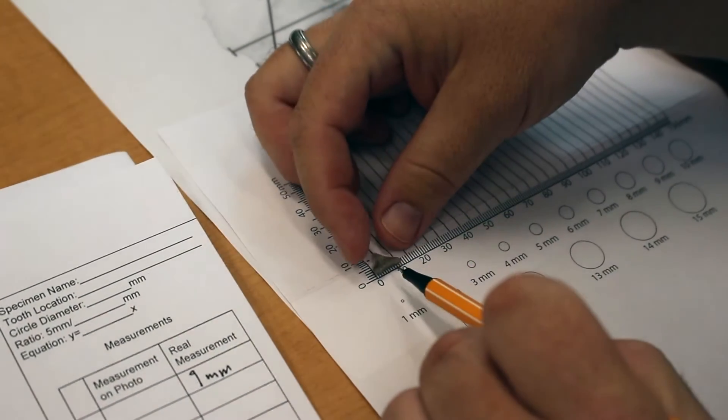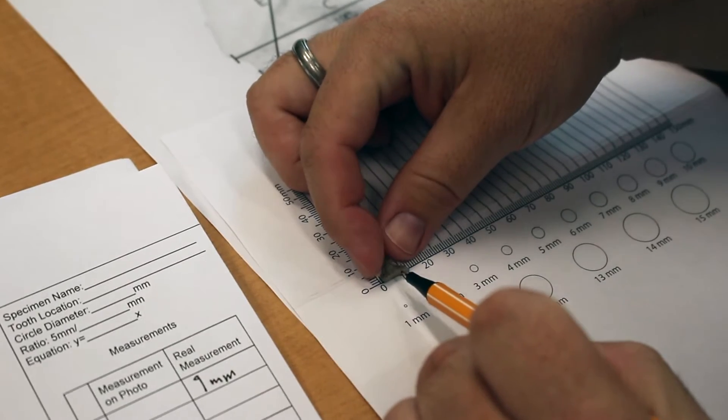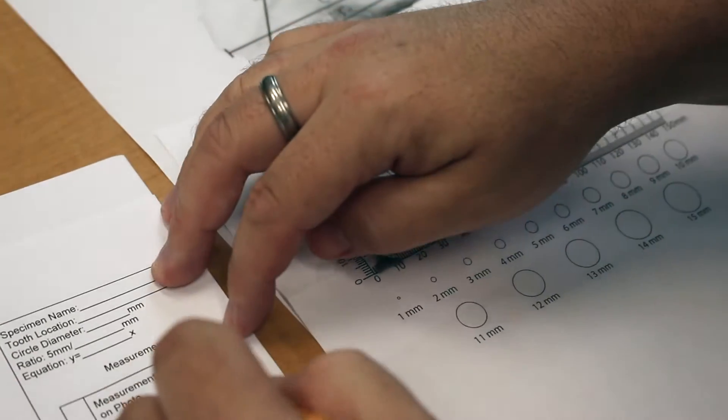Then we're going to measure B, which is going to be the widest part of the root, which on this lining it up is 11 millimeters.